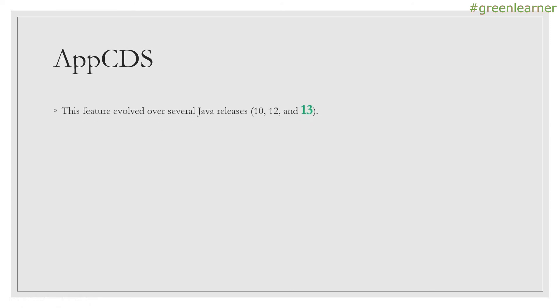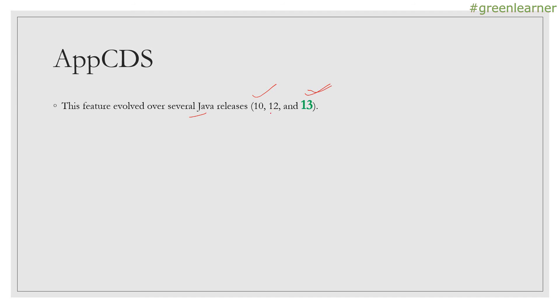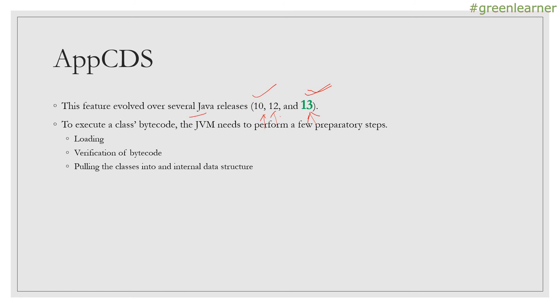So what is App CDS? As I mentioned, this feature has been evolved over Java releases. It was first introduced in Java 10, then 11, 12, and now 13. There has been an enhancement in almost each release. In this video, we will be mainly focusing on JDK 13. So what is App CDS and why did it come into picture? Let's get some background. If you are going to execute any application - if you have any jar file which you are executing - there are some steps that need to be performed by the JVM.